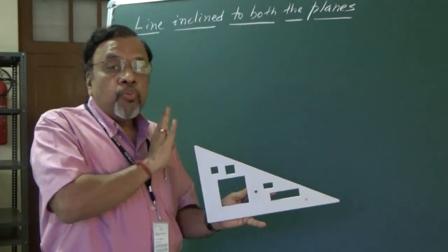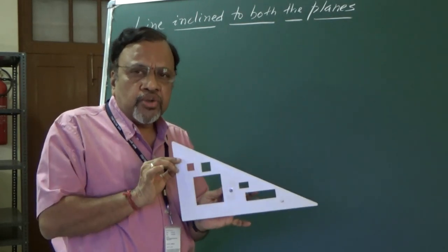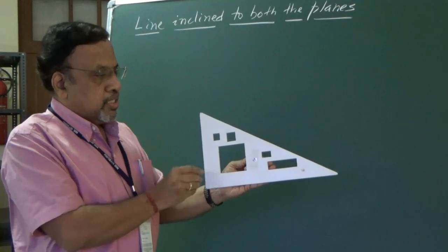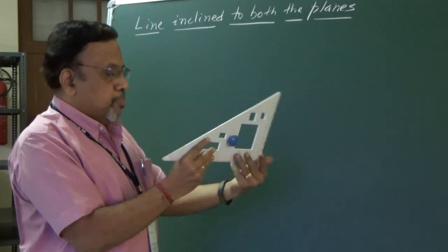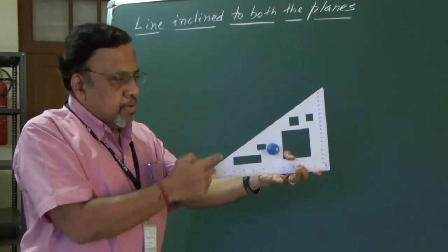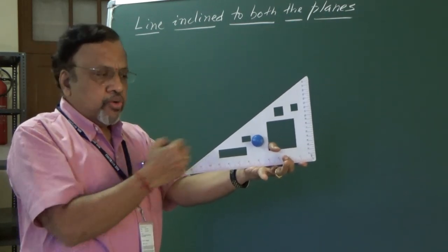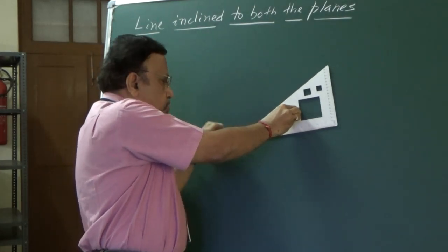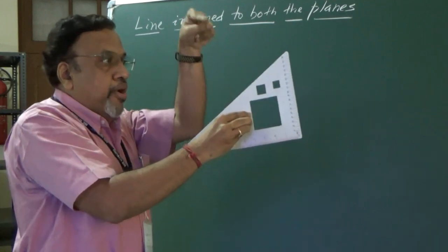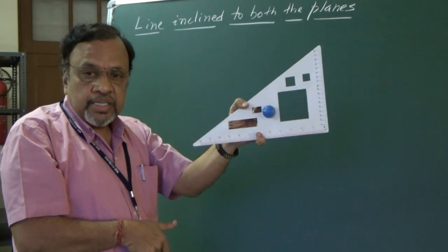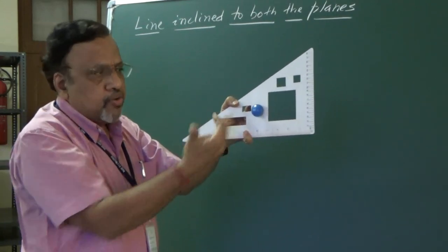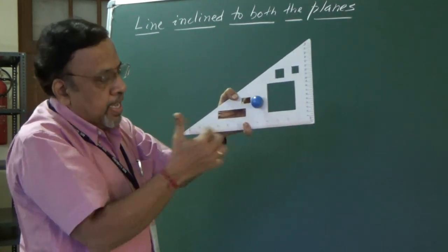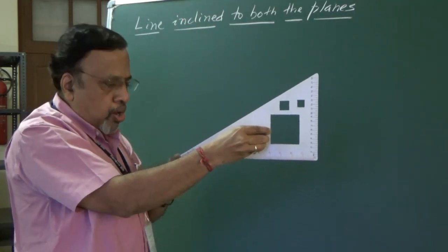Now I will illustrate this on the board without a 3D series. I want to show how we can understand a line inclined to one plane and also to the other plane. When the line is inclined to HP and parallel to VP, we see the true length in the front view inclined at the true inclination. In the top view, since the line is inclined to HP, it is foreshortened — this length is nothing but the projection or the length of the top view, LTV.